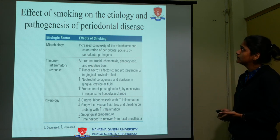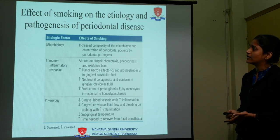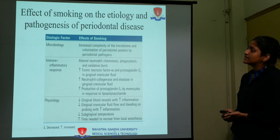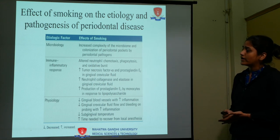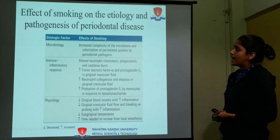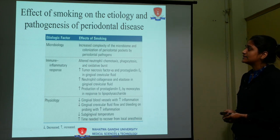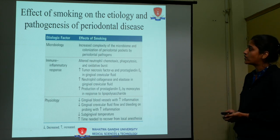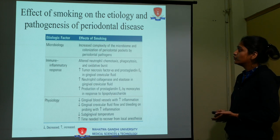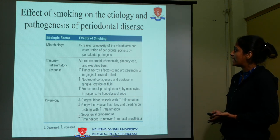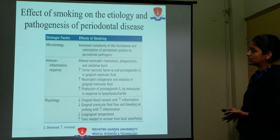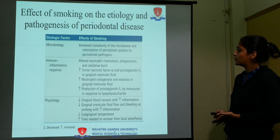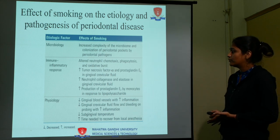Regarding the effect of smoking on the etiology and pathogenesis of periodontal disease: in microbiology, there is increased complexity of the microbiome and colonization of periodontal pockets by periodontal pathogens. In immune-inflammatory response, there is altered neutrophil chemotaxis, phagocytosis, and oxidative burst. There is increased tumor necrosis factor alpha and prostaglandin E2 in gingival crevicular fluid, increased neutrophil collagenase and elastase in gingival crevicular fluid, and increased production of prostaglandin E2 by monocytes in response to lipopolysaccharides.